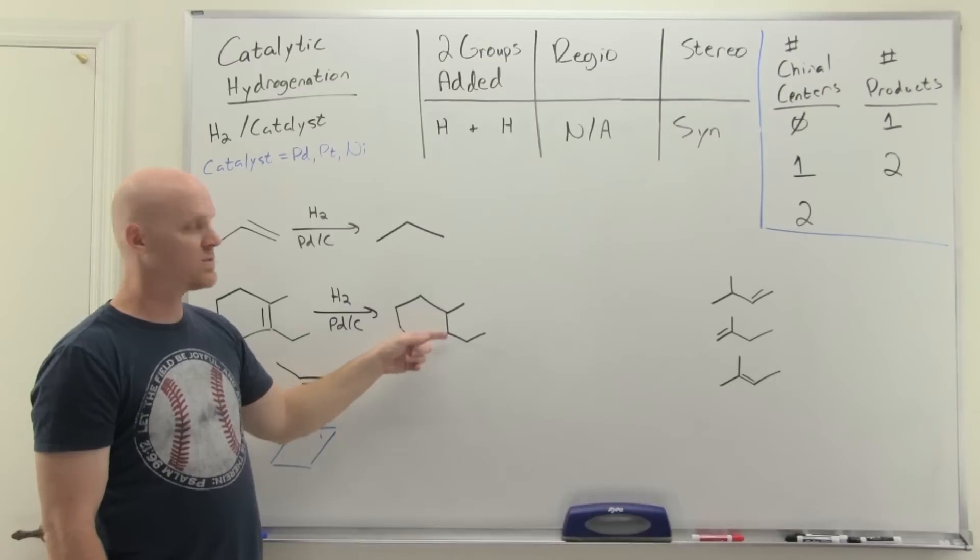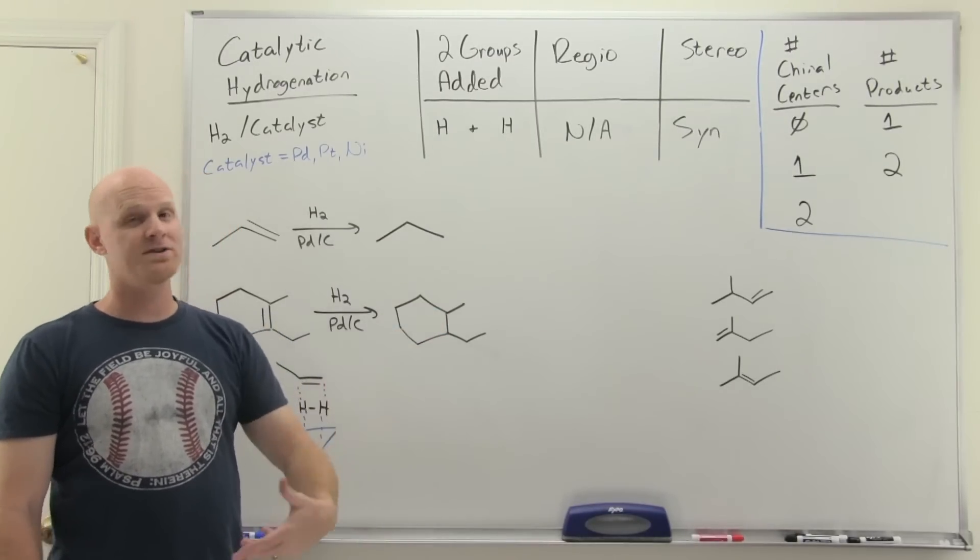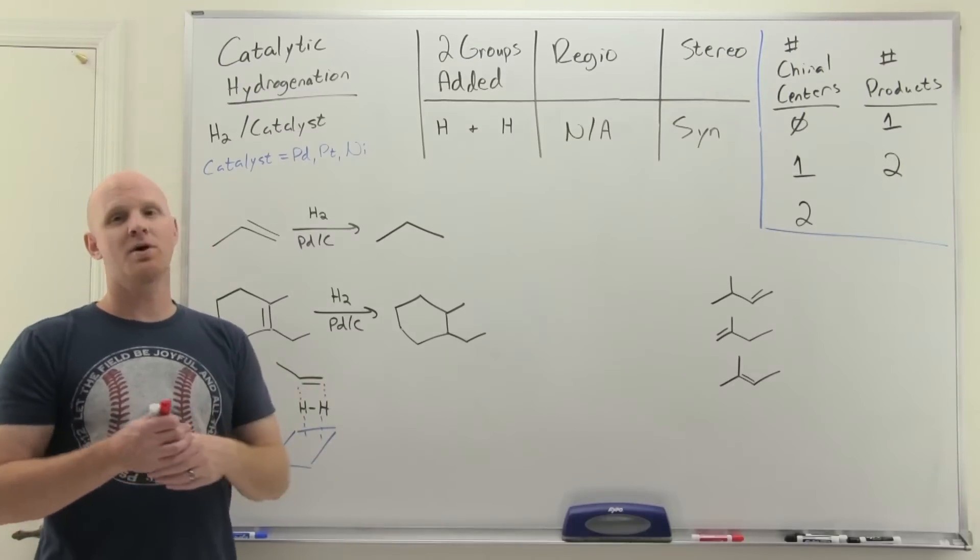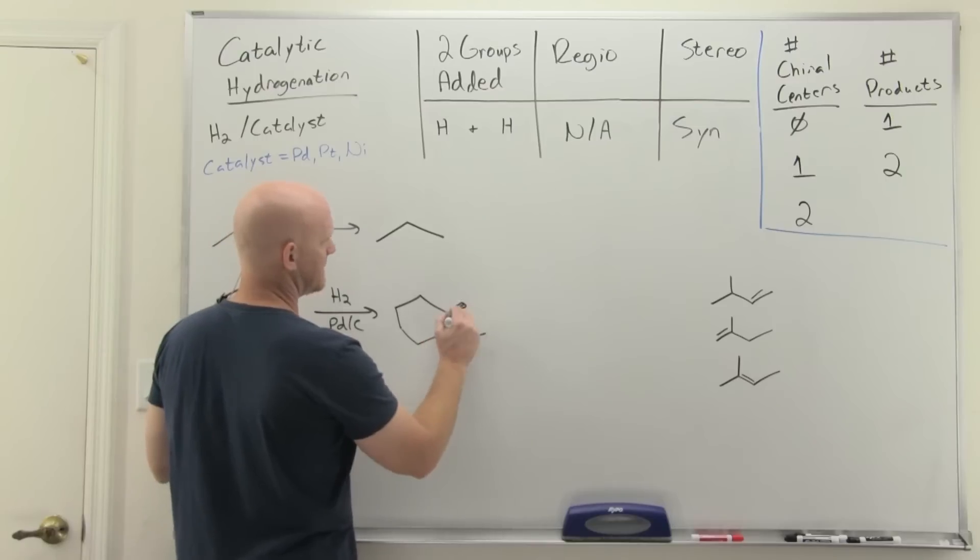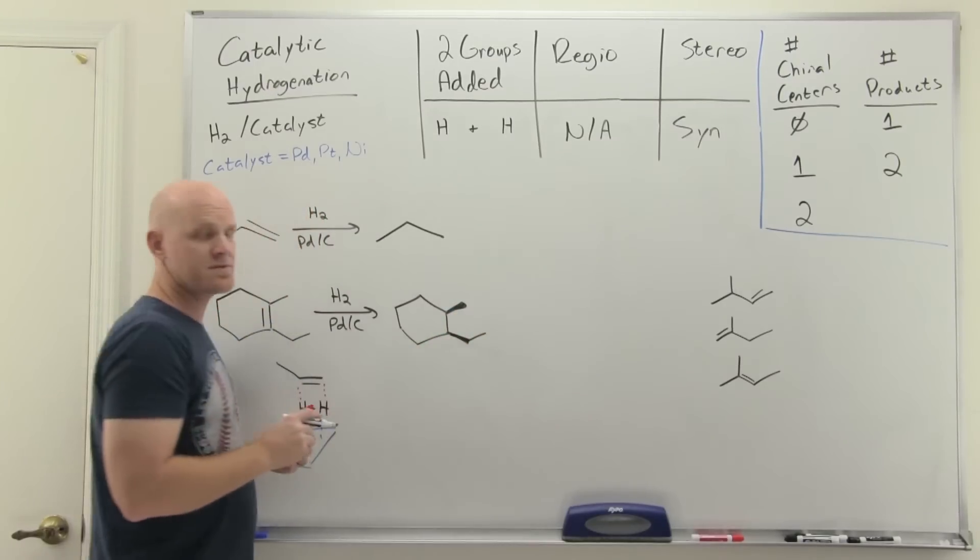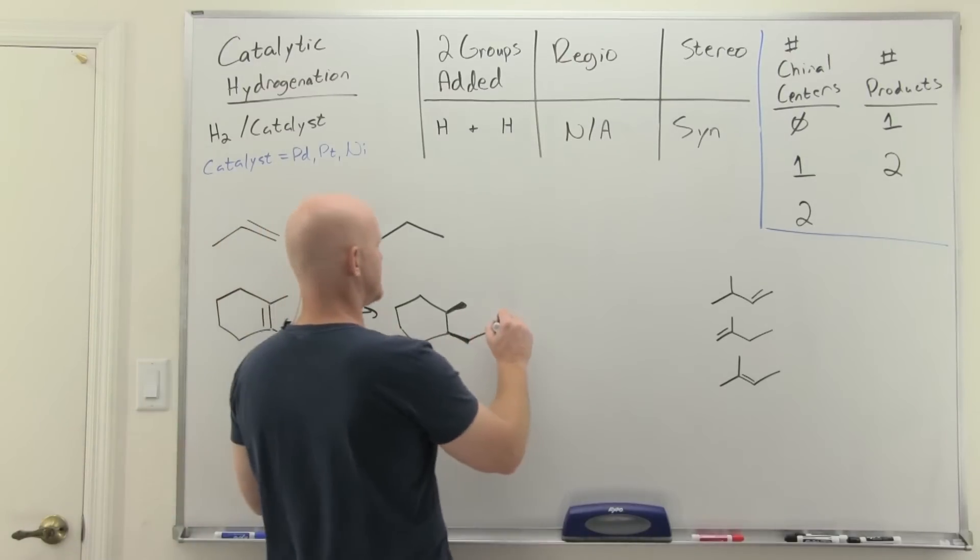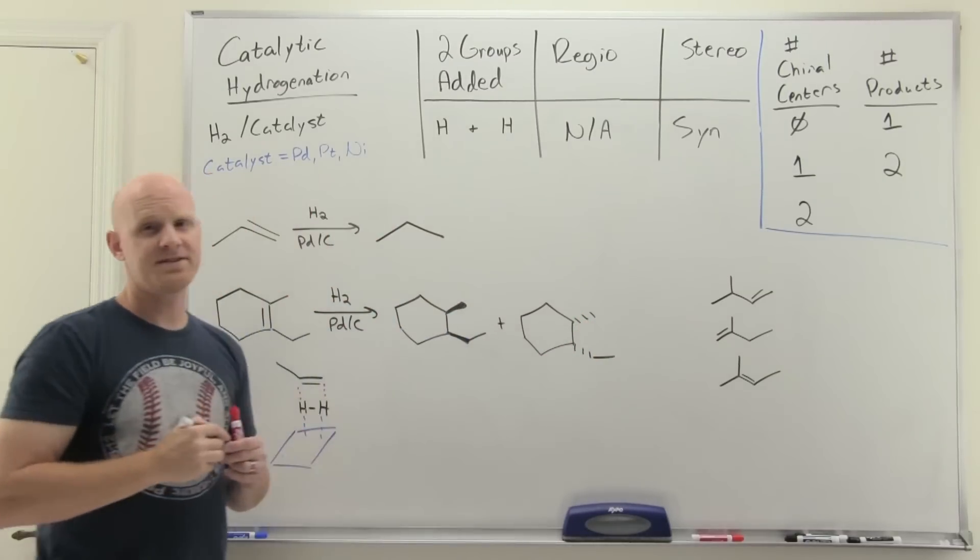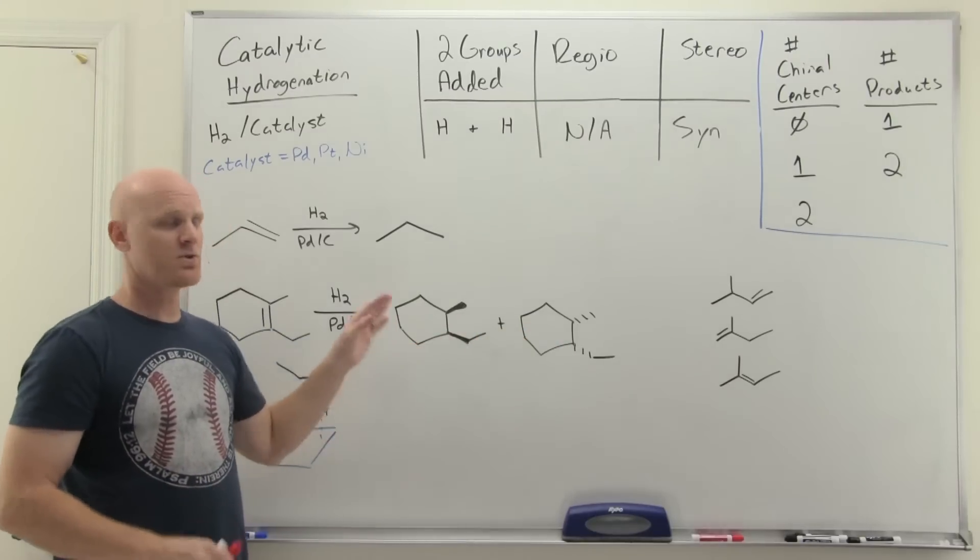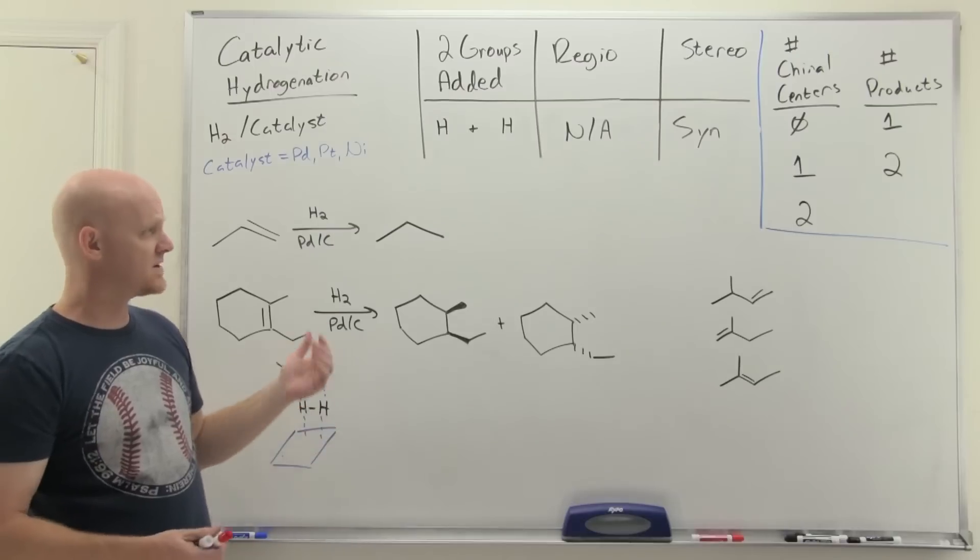What this means is that the two hydrogens we added, added to the same face, the same side of the molecule, both wedges or both dashes. If I made them both dashes, that would mean our methyl and ethyl are both wedges—that would be one product. But the two hydrogens could have been both on the wedge side, which would mean my methyl and ethyl are both on the dashed positions. And so we get this racemic mixture, two products. Those would be our two syn products.